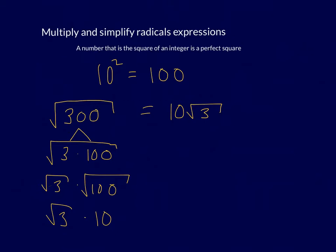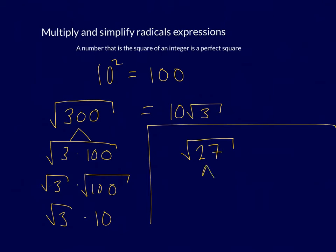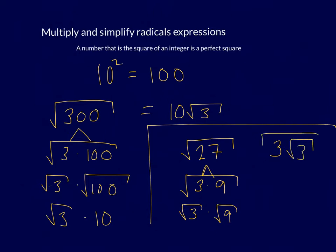Let's look at another one. If I have the square root of 27 — does 27 have a factor that is a perfect square? We know 27 is either 1 times 27 or 3 times 9. If we take the square root of 3 times 9, we get the square root of 3 times the square root of 9. The square root of 9 is 3, and the square root of 3 stays inside the radical because you cannot simplify it further.